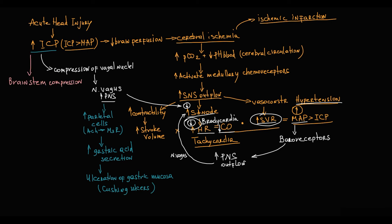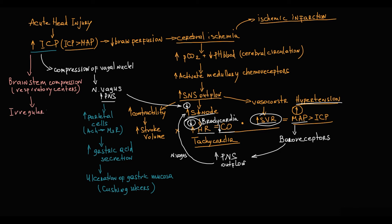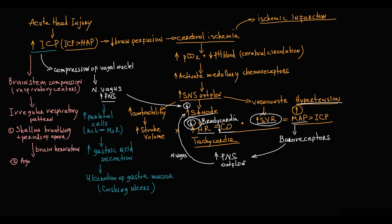At some point, intracranial pressure also compresses the brainstem. Because the brainstem contains centers that control involuntary breathing, this compression disrupts normal function of the respiratory centers, resulting in development of an irregular respiratory pattern. Initially this is shallow breathing with occasional periods of apnea, but as intracranial pressure increases and brain herniation begins, it progresses to agonal breathing that potentially culminates in apnea.